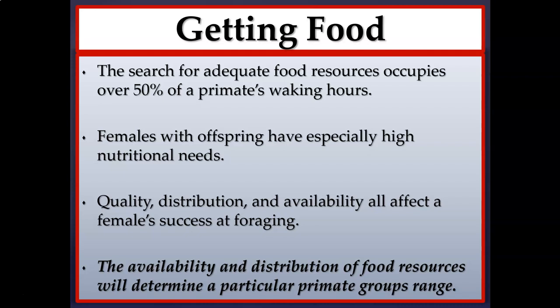Distribution refers to how food is scattered across the landscape. Depending upon the time of year, a primate may need to travel a farther distance to gather adequate food to support the entire group or troop. Availability refers to seasonality, especially when talking about fruits and vegetation. Some fruits may be available during some seasons and not others, so the primate group would need to switch food resources.